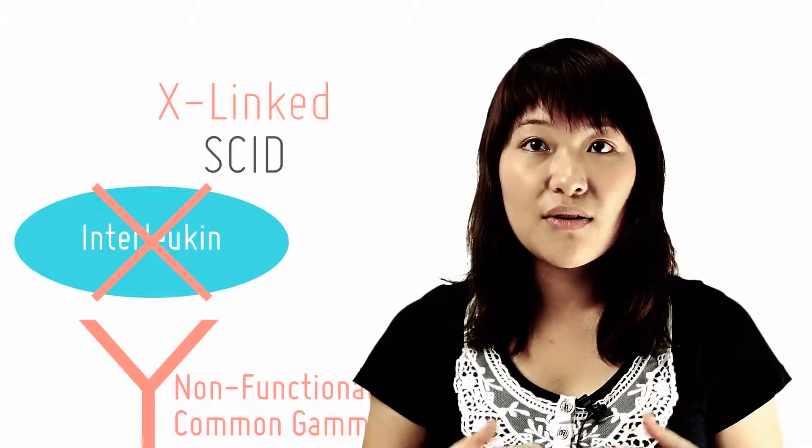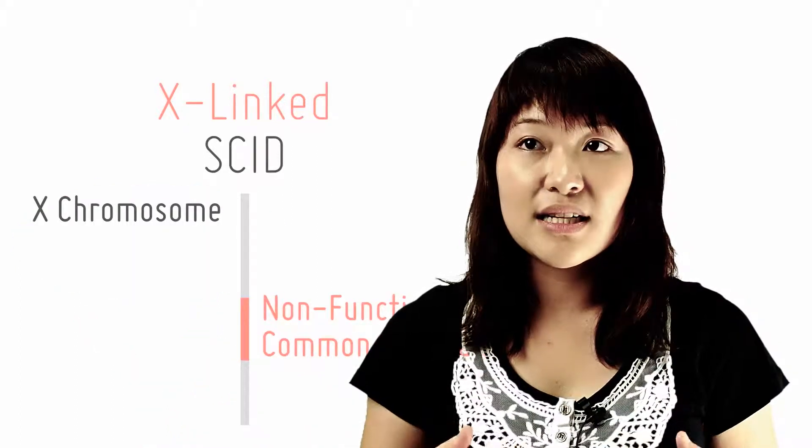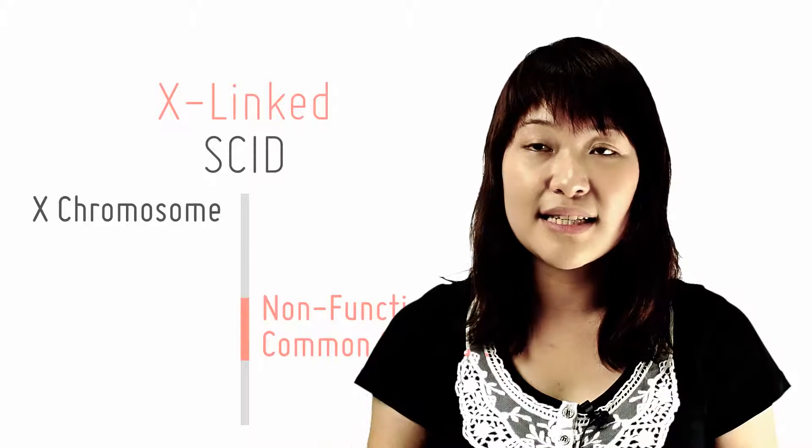The gene coding for the common gamma chain is located on an X chromosome and hence this condition is inherited in an X-linked recessive pattern.